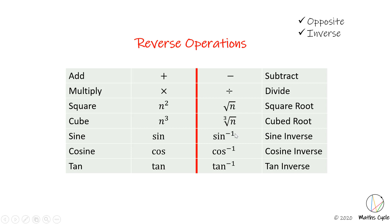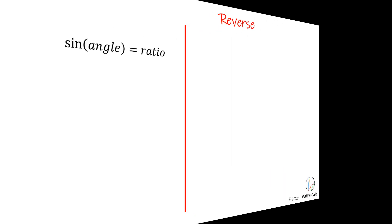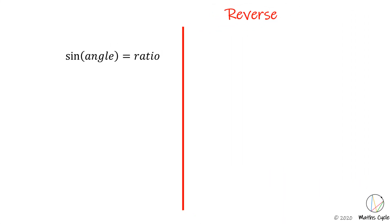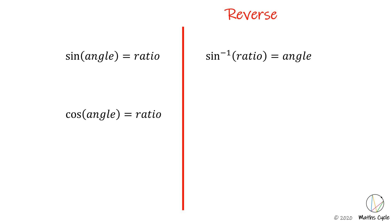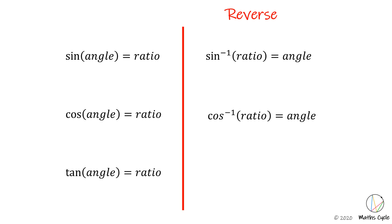The reverse of sin is sin inverse. What that means is: the sin of an angle equals a ratio, so to reverse that, the sin inverse of a ratio goes back to the angle. Similarly, the cos of an angle equals a ratio, so the cos inverse of a ratio equals the angle. And finally, the tan of an angle equals a ratio, so the tan inverse of that ratio equals the angle.